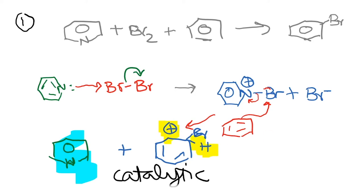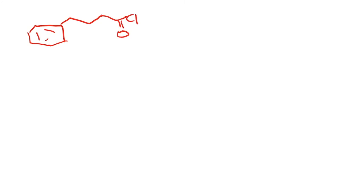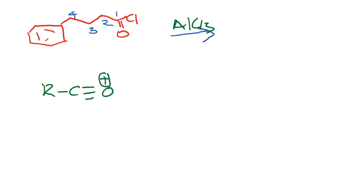Now let us move on to the next problem, which is to do with the Friedel-Crafts acylation reaction. The question is: what is the product formed when a compound bearing both a benzene ring and an acid chloride chain is exposed to AlCl3? Let us redraw the compound structure and number it 1, 2, 3, 4 — with the benzene ring attached. When AlCl3 reacts with the acid chloride, we know a specific intermediate is going to be formed.